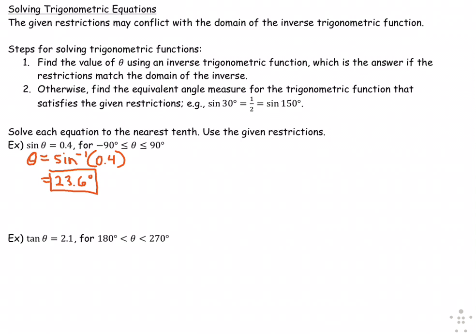Looking at the next example, we'll go through step one. We find that the inverse tangent of 2.1 is 64.5. Now that is not falling within the given restrictions for θ. But also I want to note that the domain for this can be any number for tangent. And for sine, it has to be between -1 and 1. So you have to make sure that's legitimate as well. So now we need to move to step two, which is to find the equivalent angle measure for the trig function that satisfies the given restrictions.